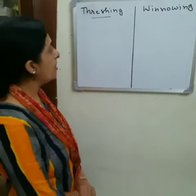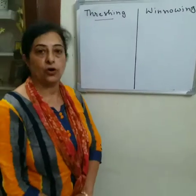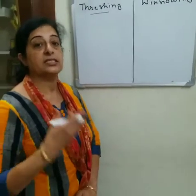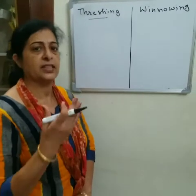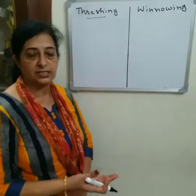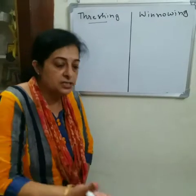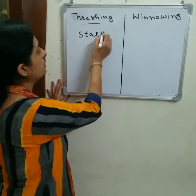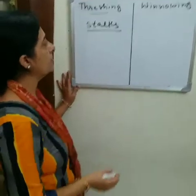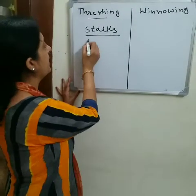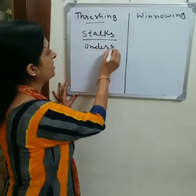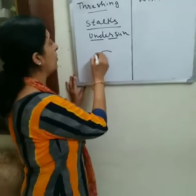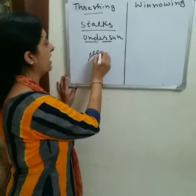The first method is threshing. After the crops mature, they are harvested from the field just near to the ground. After harvesting, the stalks are dried in the sun. These stalks are kept under the sun for drying so that they dry well. Each stalk has a number of grain seeds attached to it.